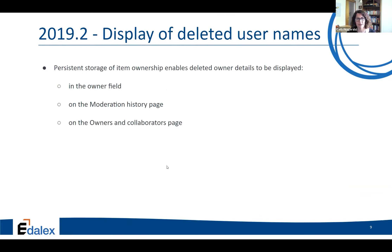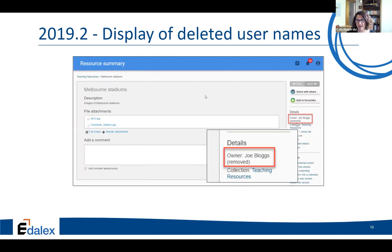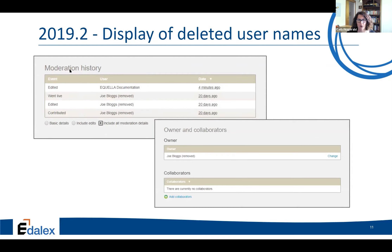The display of deleted usernames — persistent storage of item ownership. We now show in the owner field on the moderation history page and on the owners and collaborators page if a user has been deleted. There's an example of an owner that has been removed. On the moderation history and owner and collaborators page we can now see a history of deleted users.